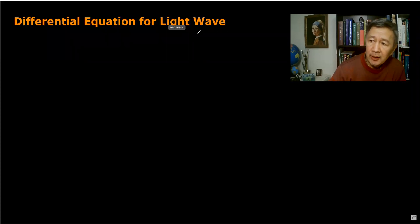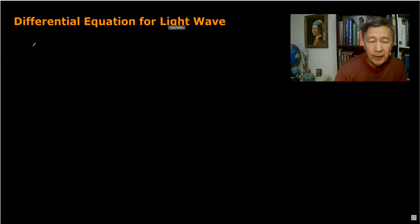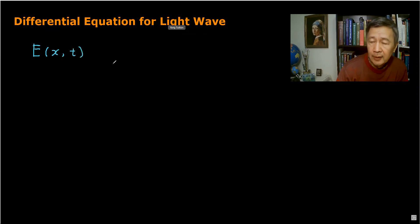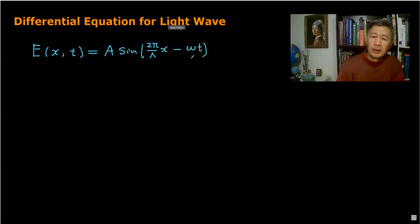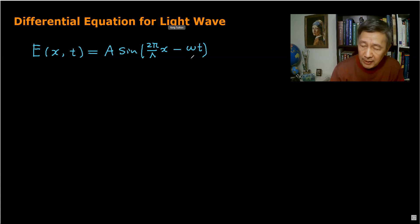First, let's write the wave equation we obtained last time. For electromagnetic waves, we can use E, the electromagnetic field strength, as a variable — a function of space and time. Last time we derived a simple sine function to describe a plane wave: A sine of (2π divided by lambda) multiplied by x minus omega t. Now we are going to find the same relation among the variables but in differential equation form.